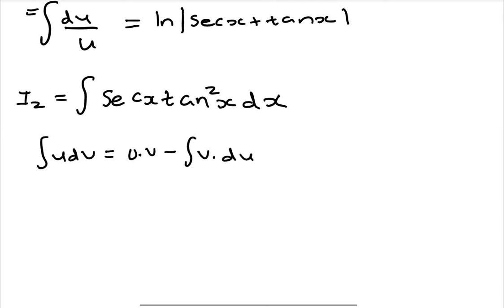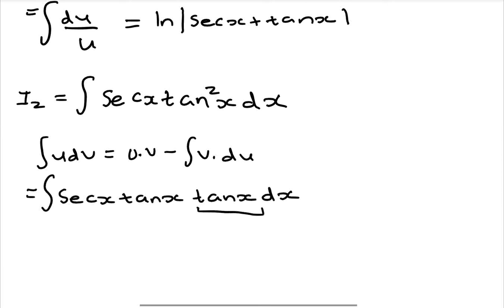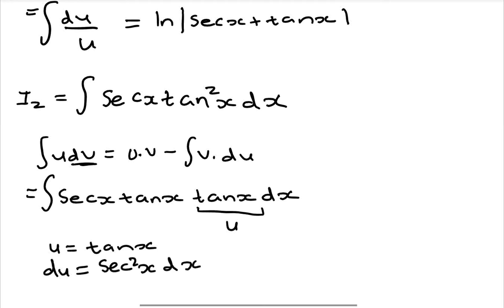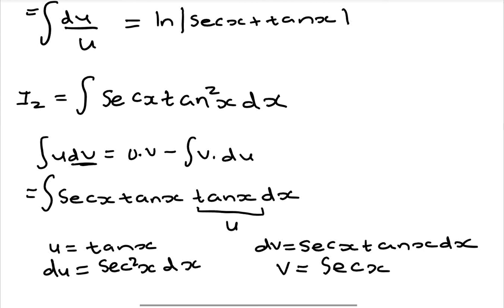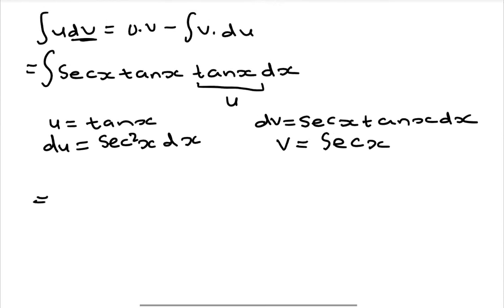Our integral can be separated such that u equals tan(x) and dv equals sec(x)tan(x) dx. So u equals tan(x), and du equals sec²(x) dx, which is the derivative of tan(x). dv equals sec(x)tan(x) dx, and the integral of sec(x)tan(x) gives v equals sec(x). Applying the formula, the result becomes tan(x)sec(x) minus the integral of sec³(x) dx.